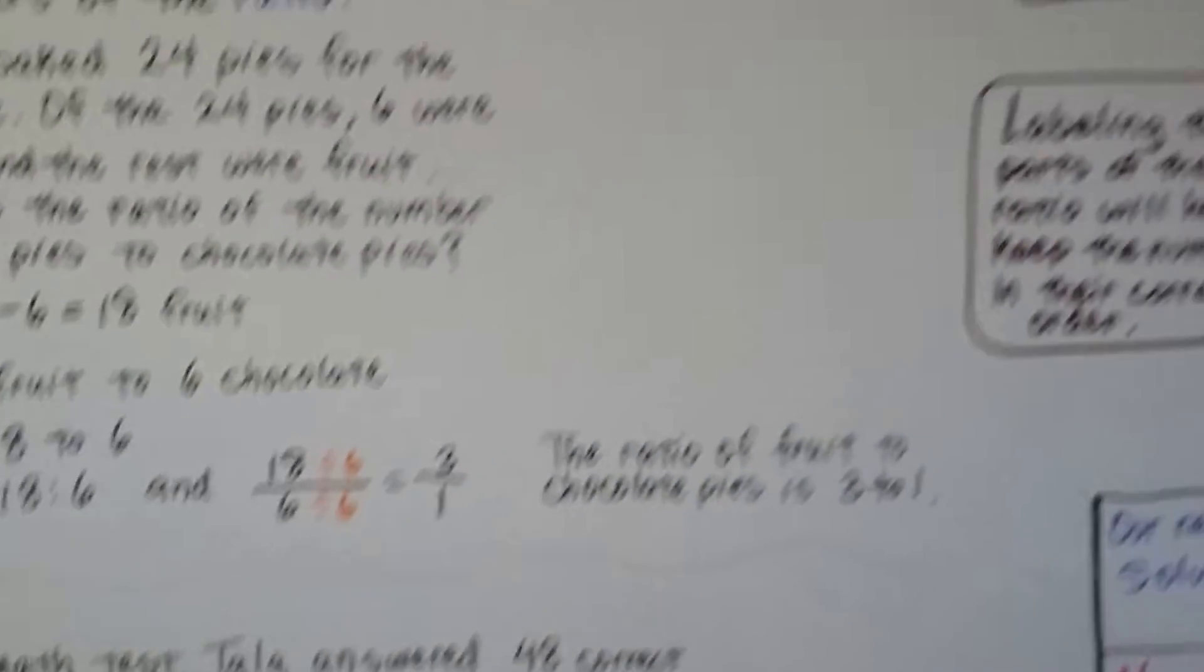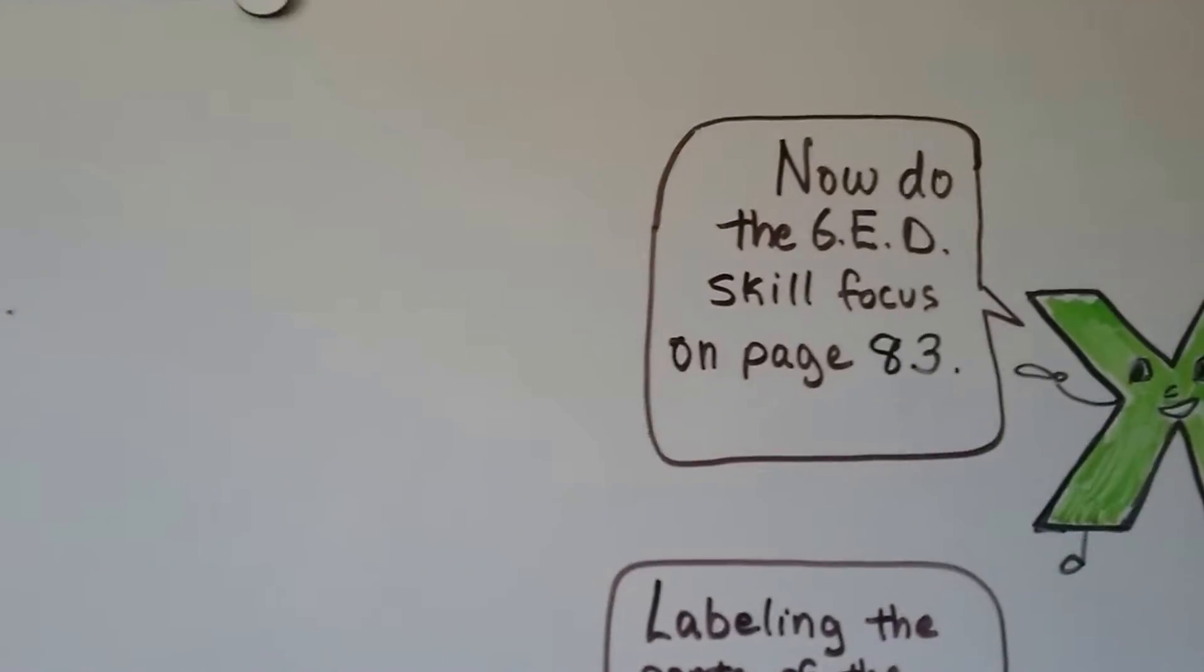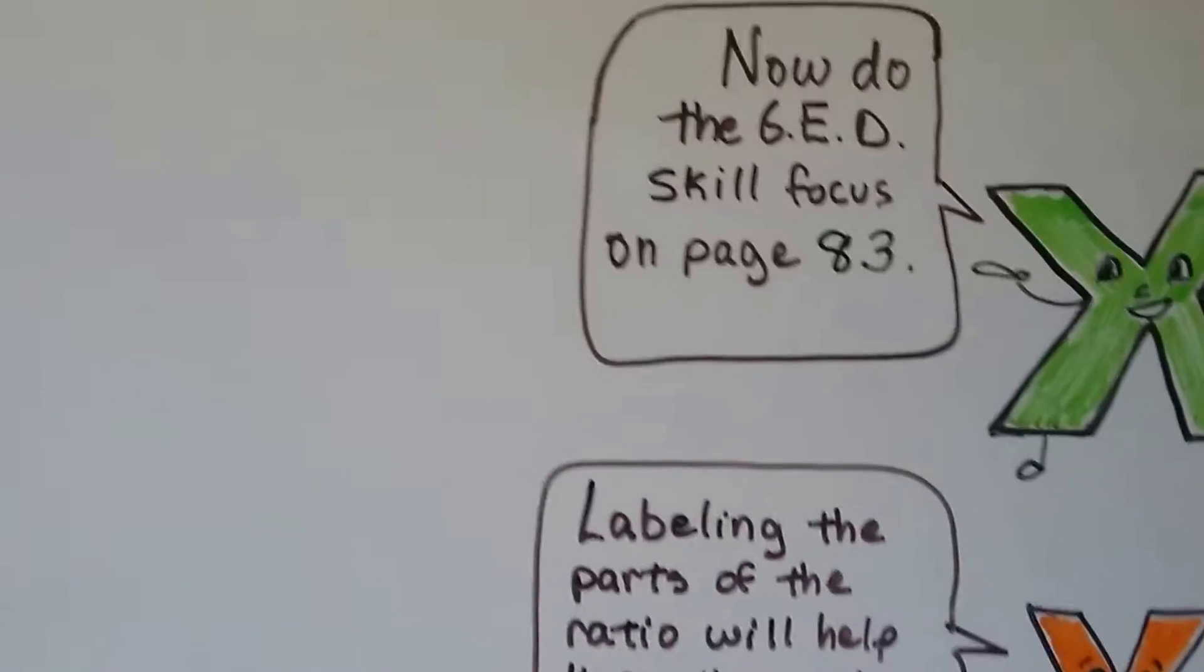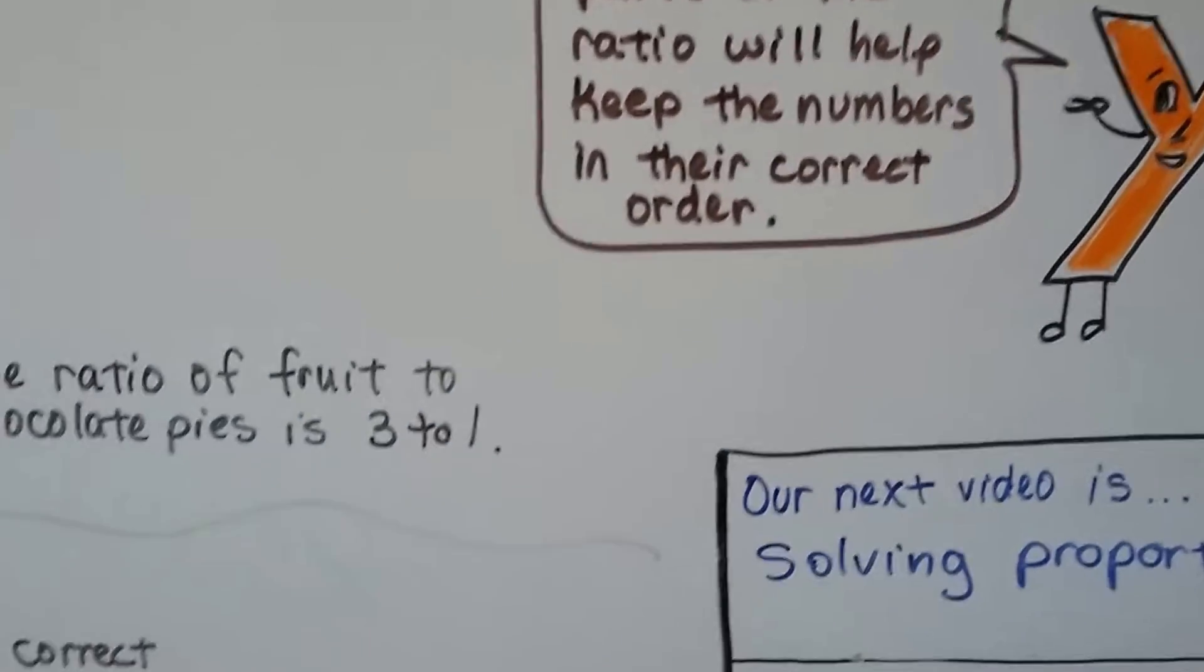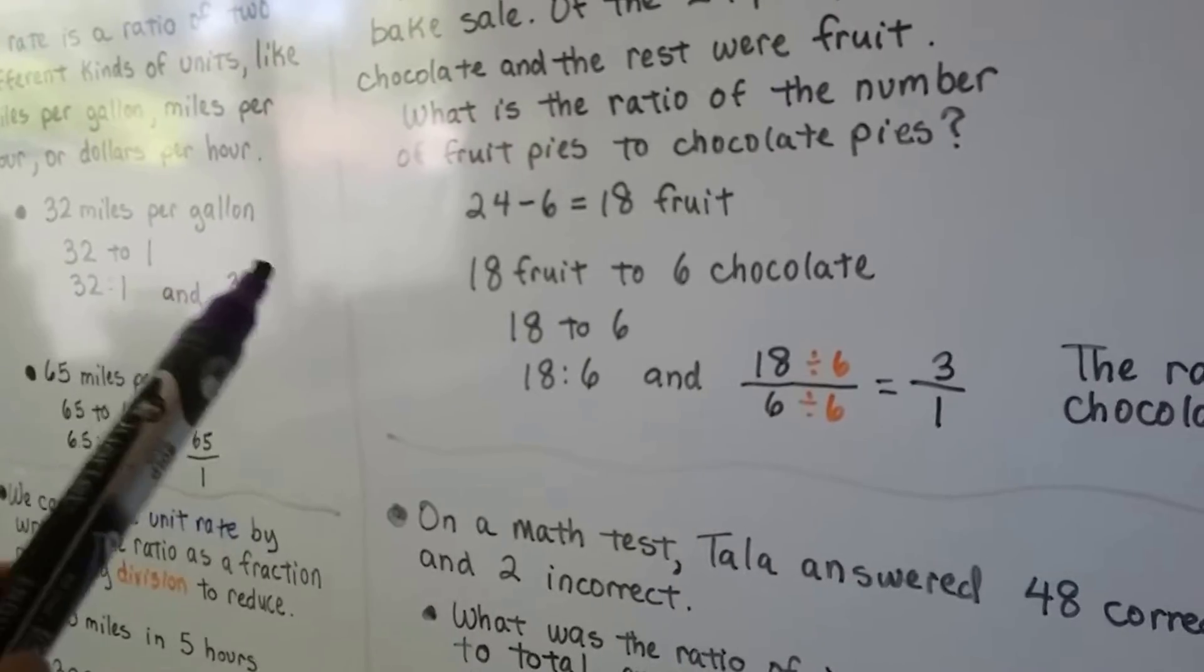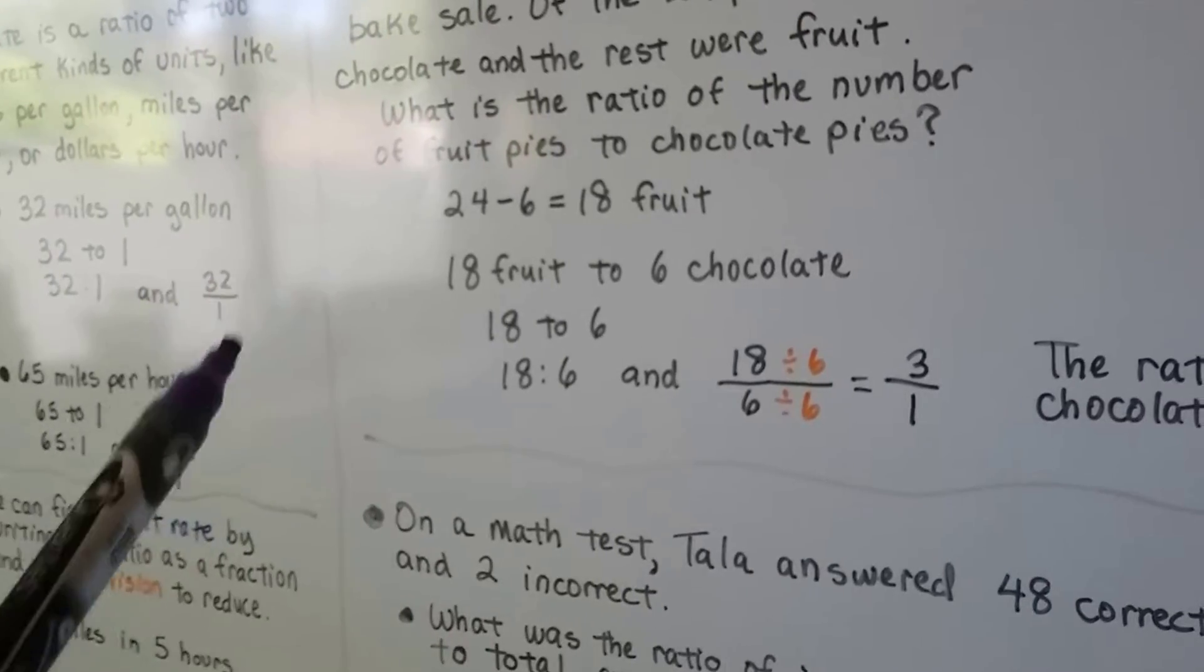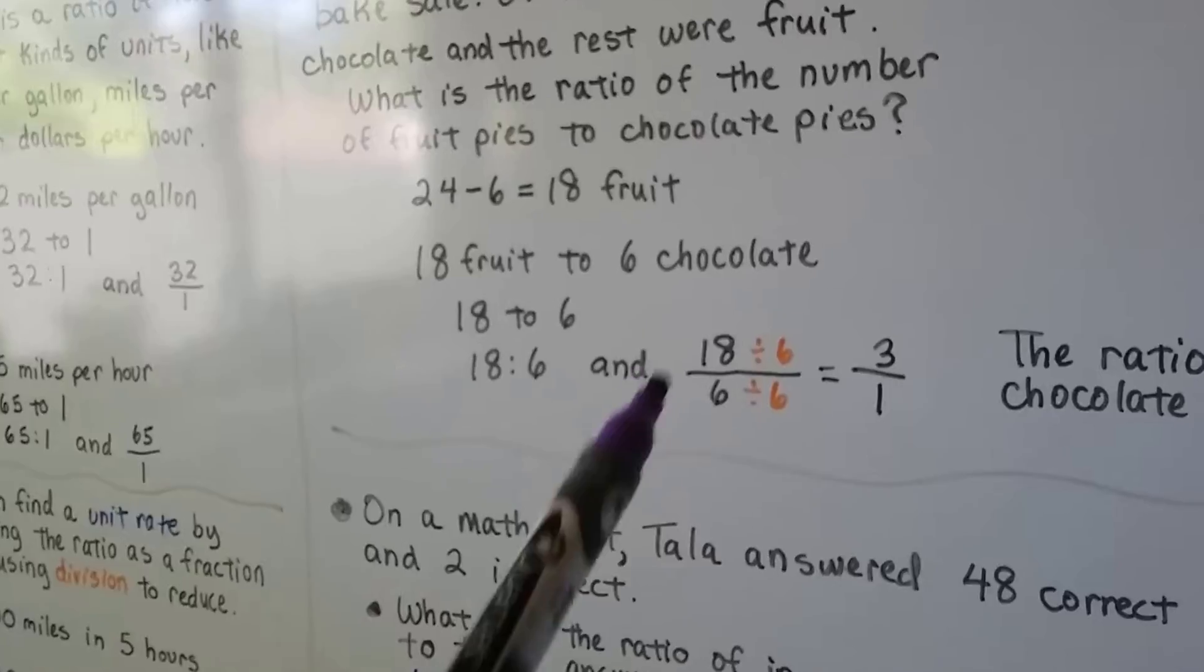Now you should be ready to do the skill focus on page 83. Remember that labeling parts of the ratio will help keep the numbers in their correct order. If you're trying to remember fruit to chocolate or miles per gallon, put a label of miles and gallon or fruit and chocolate to help yourself.